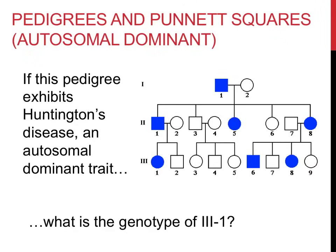The second question about Huntington's disease asks: what is the genotype of Roman numeral 3-1? Identify who you're talking about first. Roman numeral 3-1 has this dominant trait, so she must have at least one dominant allele, one capital letter. Since her mother, Roman numeral 2-2, didn't have this trait, she must have been homozygous recessive. Filling out a Punnett square leaves only one possibility: she must be heterozygous, with the genotype capital G, lowercase g.